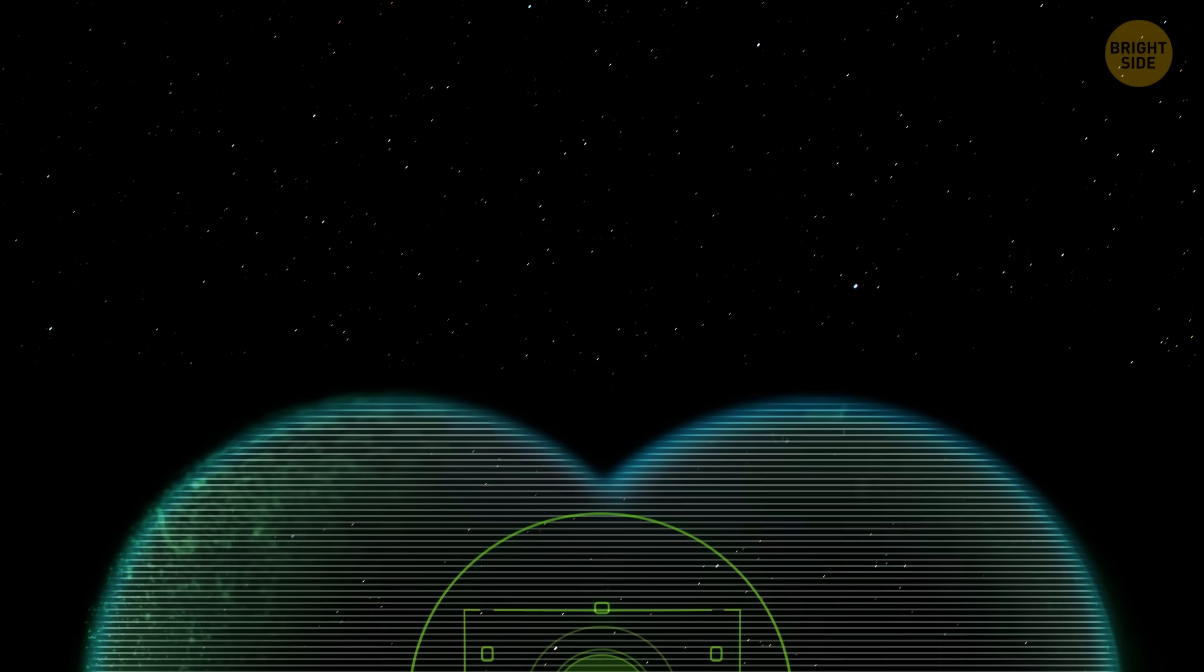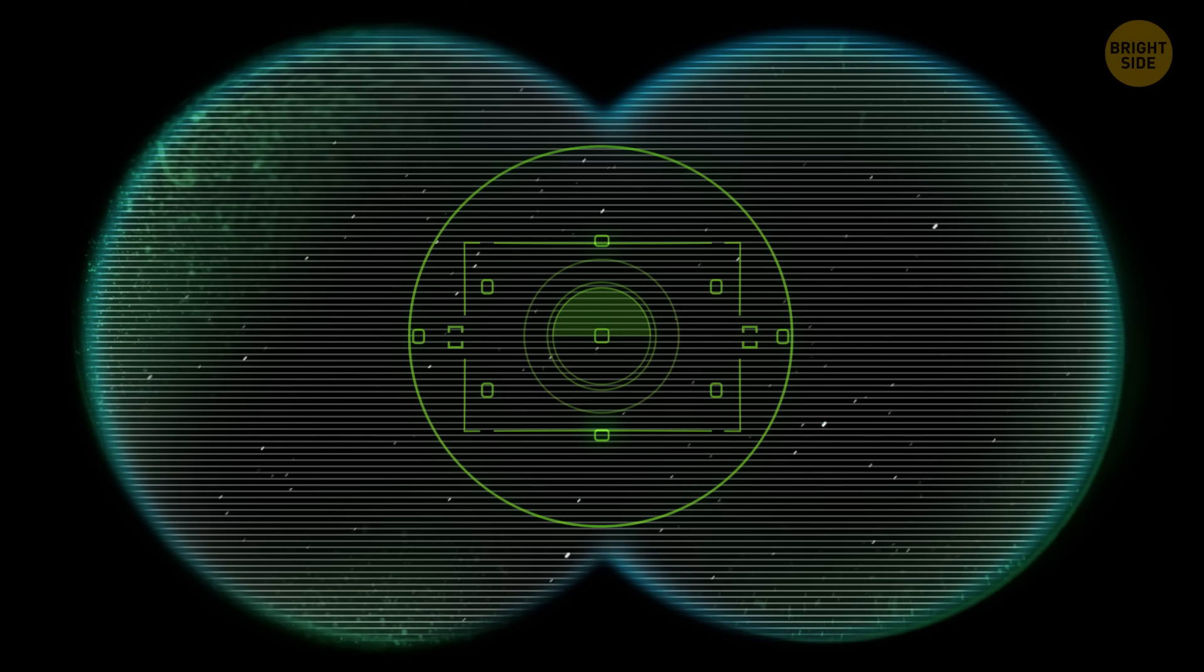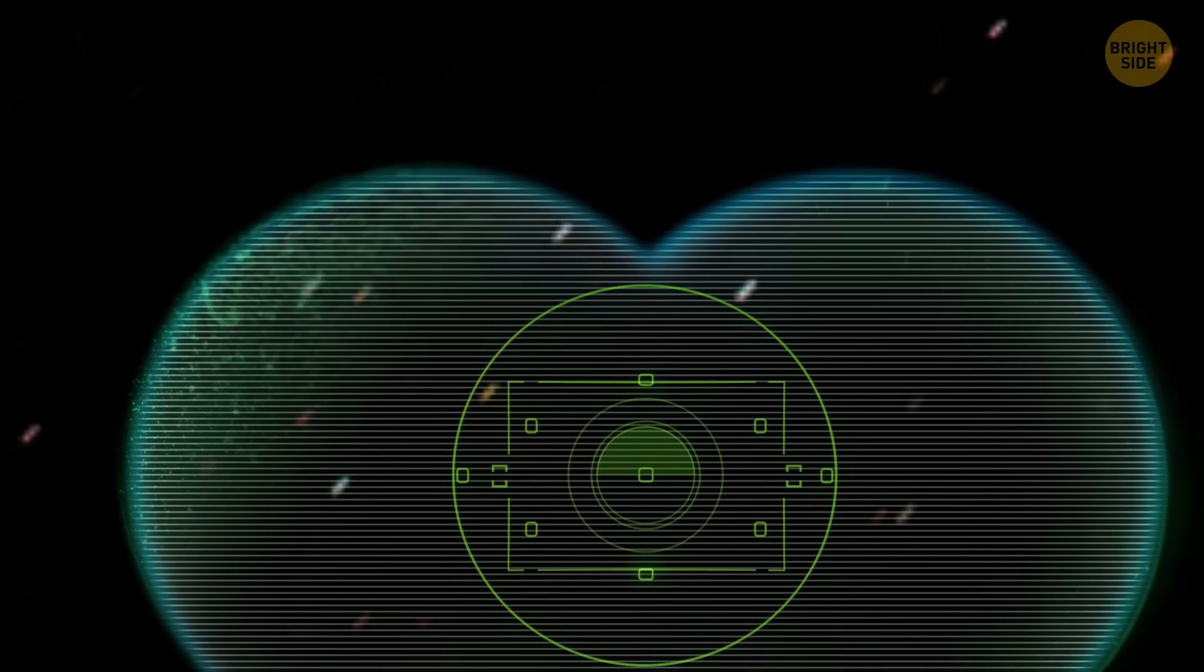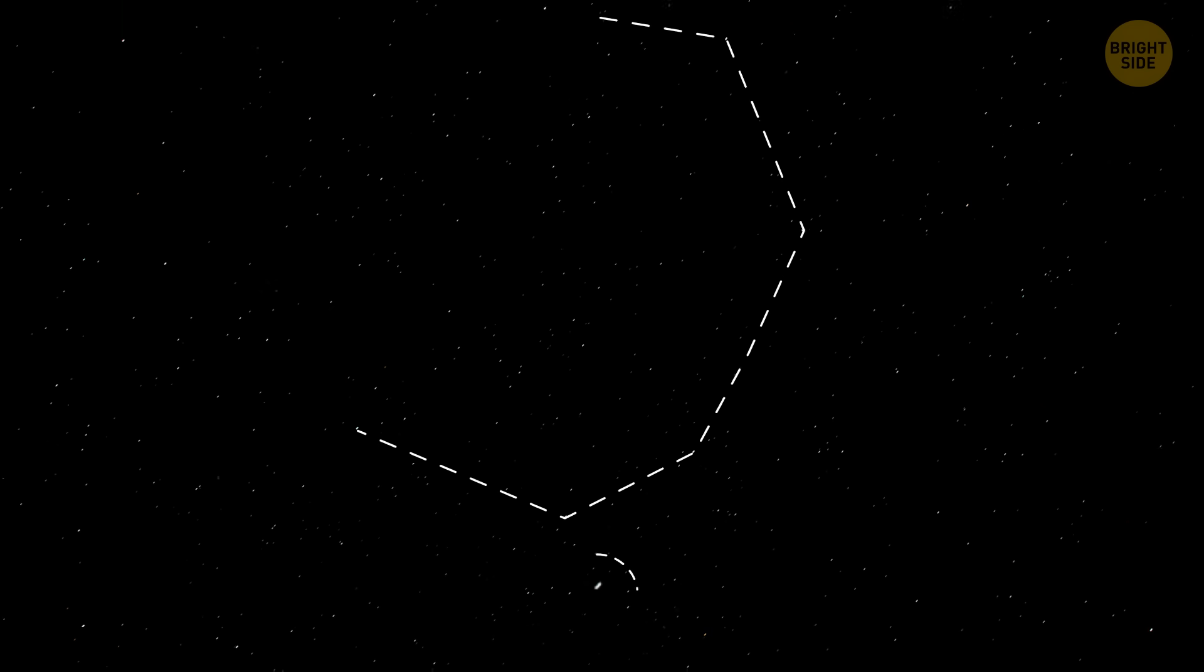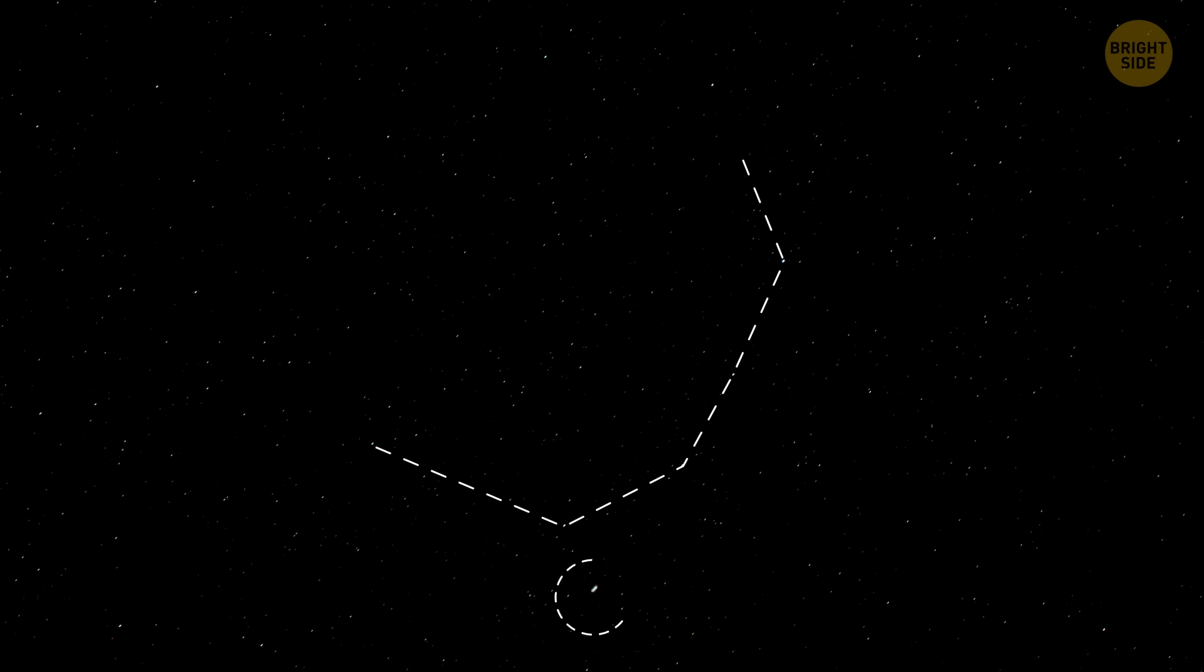Now, we can only see the binary with binoculars in a completely dark sky. After the outburst, T Corona Borealis will remain the brightest star in the constellation of Corona Borealis for a few days before gradually dimming.